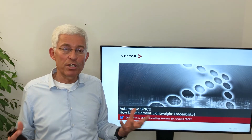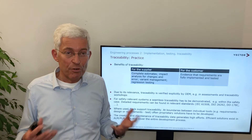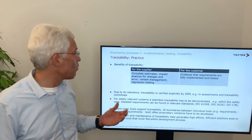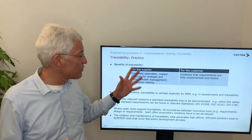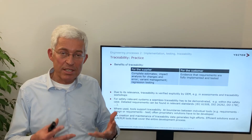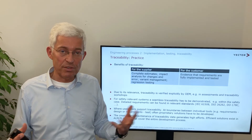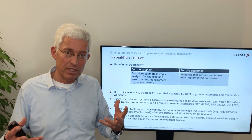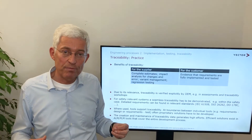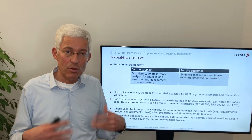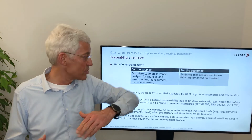Let us look into what are our best practices which we have found in our different Vector projects. For the supplier, we can see a consistency of the different work products — that we have a safety case which has all the necessary elements related to the initial safety goal, that we are able to cope with changes, and that we can keep variants and versions consistent to each other, because we have a trigger point: if there is a change here, we have to make changes there as well.